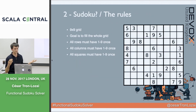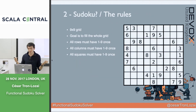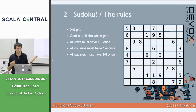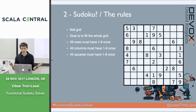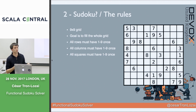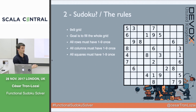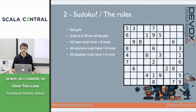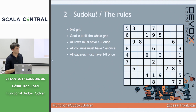Probably everyone knows what a Sudoku is, but just in case: it's a nine-by-nine grid and the goal is to fill the grid with numbers from one to nine. There are three rules: all rows must have all numbers exactly once, the same applies to columns, and the same applies to the nine squares. Using these three rules we solve the Sudoku.